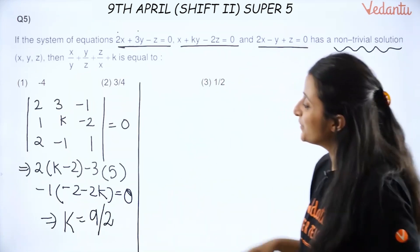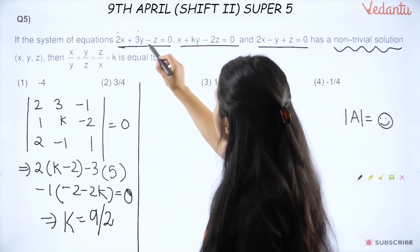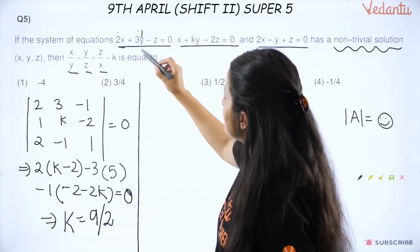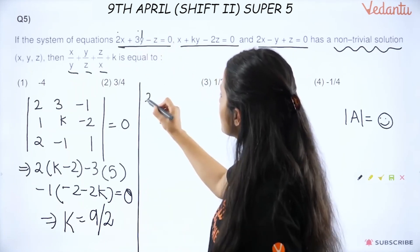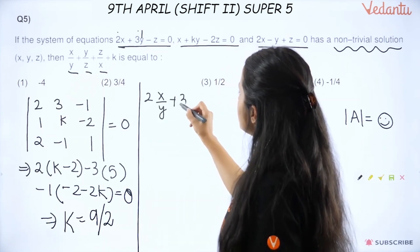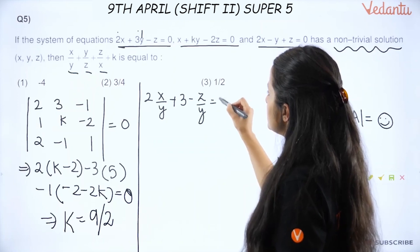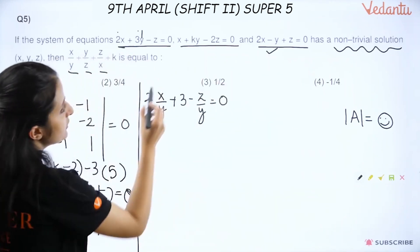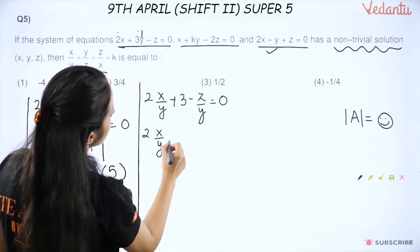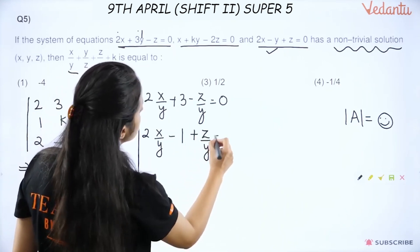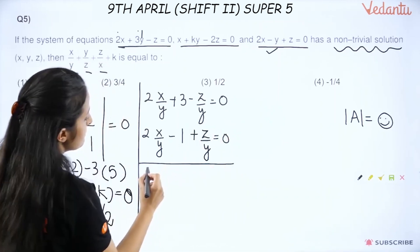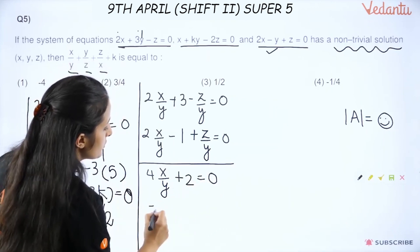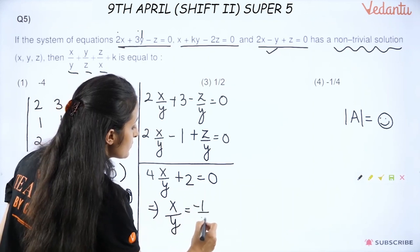Now obviously you will solve this. So solve and tell me, k will turn out to be 9/2. Calculations obviously you can do, k is 9/2. Now look here what happens. One thing is I want the ratio x/y, y/z and z/x. Here to make x/y, I can divide by y. So this becomes 2(x/y) + 3 - (z/y) = 0. And same way, if I try doing the same thing for the third equation, here also I get 2(x/y) - 1 + (z/y) = 0. If I add these two equations, I get 4(x/y) + 2 = 0, meaning x/y = -1/2.